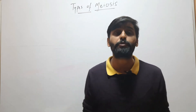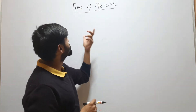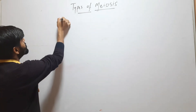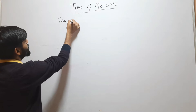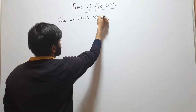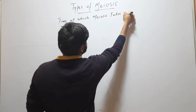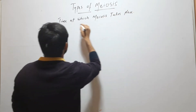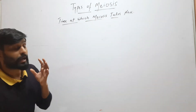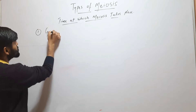Hello friends, welcome to my YouTube channel. In this video, we will discuss types of meiosis on the basis of time at which meiosis takes place. Meiosis is of three different types. The first is gametic meiosis.